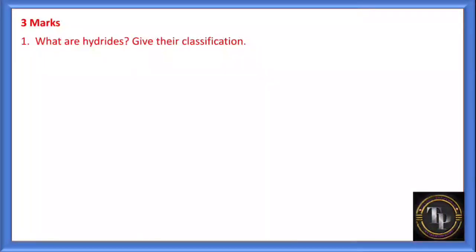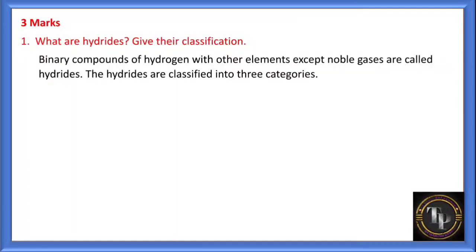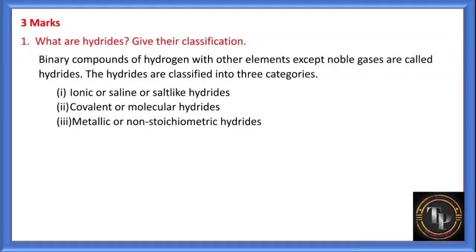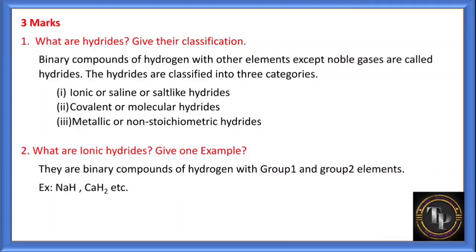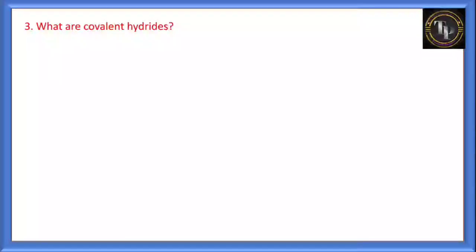What are hydrides? Give their classification. Binary compounds of hydrogen with other elements (except noble gases) are called hydrides. Hydrides are classified into three types: ionic hydrides, covalent hydrides, and metallic hydrides. Ionic hydrides are given by s-block elements (alkali metals and alkaline earth metals — group 1 and group 2). Covalent hydrides are given by p-block elements. Metallic hydrides are given by d-block and f-block elements. Example of ionic hydride: sodium hydride (NaH).